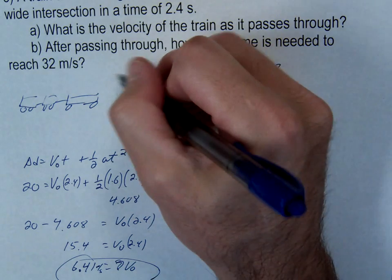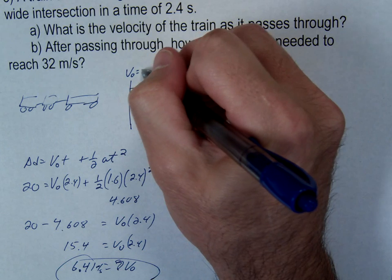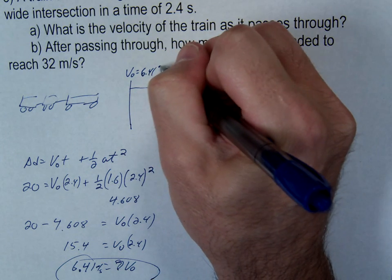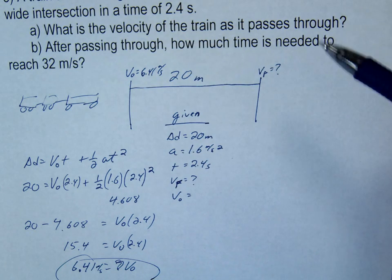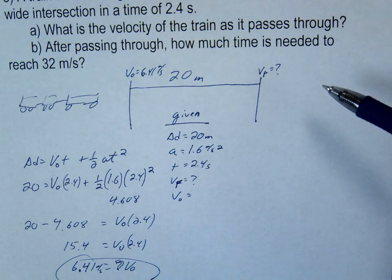And by initial, we mean right here. So, that's at this point in time, that's our speed, 6.41. Okay, and then he's going to keep getting faster and faster.